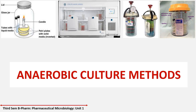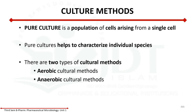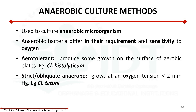We can discuss anaerobic culture methods. What is pure culture? There are two methods of culture. We have a single cell in a group of population — a pure culture. We will discuss aerobic and anaerobic culture methods. Anaerobic bacteria differ in their requirement and sensitivity to oxygen. We can classify the oxygen requirement of bacteria as: anaerobic, aerobic, obligate aerobic, facultative aerobic, aerotolerant, and obligate anaerobic.